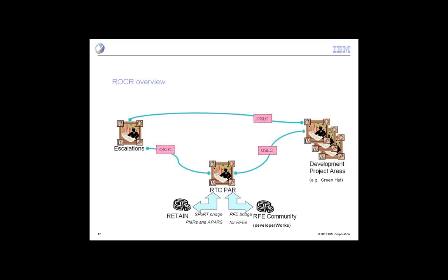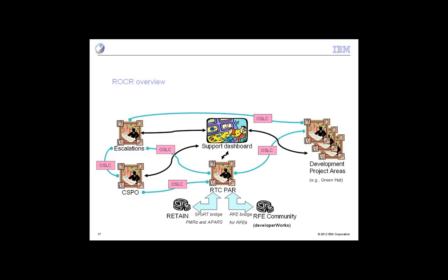We also have friendships between the PMR project area, so it's possible to link directly from a development work item to a work item in the PAR project area, working similarly through the links tab. We also have another project area for handling CRIT SITs. CSPO stands for Customer Satisfaction Project Office, and we have a special work item type called a Situation to handle CRIT SITs. We have OSLC linkages between all these project areas. In addition, we have a dashboard that provides access to all of these capabilities.